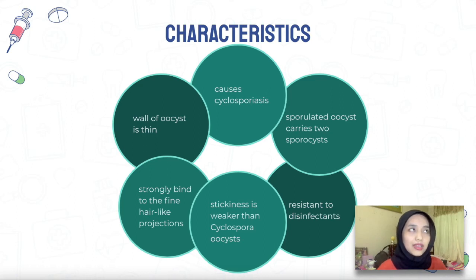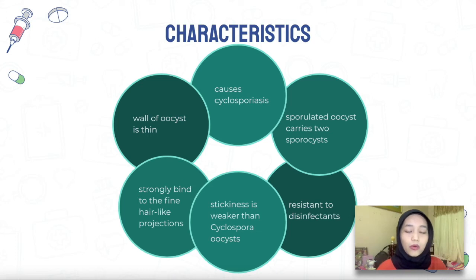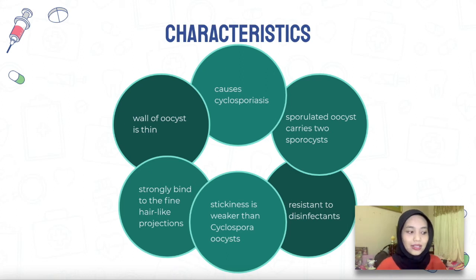Cyclospora is resistant to most disinfectants. It is also able to strongly bind to fine hair-like projections on the topography of fruit, which allows parasite retention on the fruit surface. It is also capable of binding to fresh produce, though with weaker stickiness compared to cyclosporiasis.